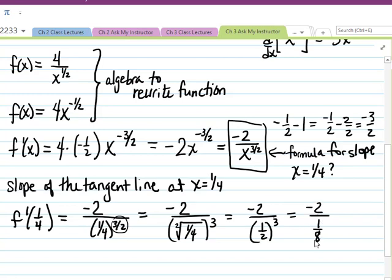So we have negative 2 over one-eighth. Or in other words, using keep, change, flip, or multiplying by the reciprocal, because this is a division problem, we have negative 2 times 8 over 1, which is negative 16.